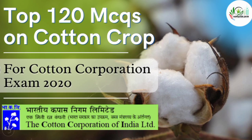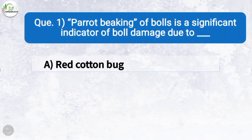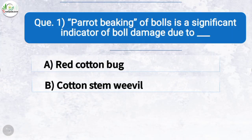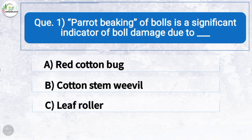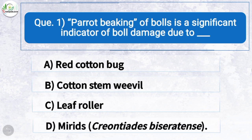Question number one: Parrot beaking of balls is a significant indicator of ball damage due to — the correct answer is option D: mirids. Parrot beaking of balls is a significant indicator of ball damage due to mirids.